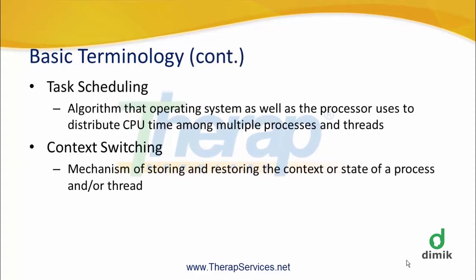Task scheduling is an important concept. Task scheduling is the algorithm that shares threads across CPU cycles. In this process, when one thread is running and another becomes idle, this switching between threads is called context-switching.